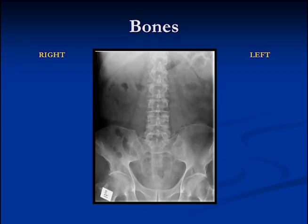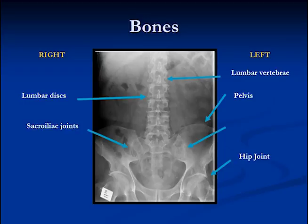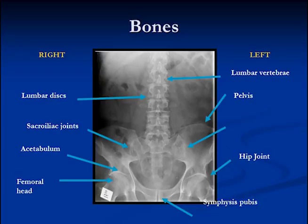This is a plain film of the abdomen, called a supine AP view. In the center we have the spine — these are lumbar vertebrae, and between the vertebrae are the disc spaces. This is the bony pelvis with the sacroiliac joints on each side, the hip joints, the symphysis pubis, the acetabulum, and the femoral head. See if you can name all those structures without me telling you what they are.